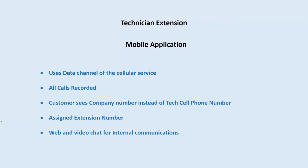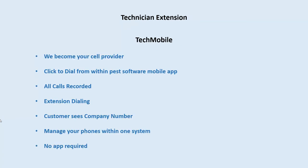The Technician Extension is a solid option, but the ideal solution is what we call Tech Mobile. With the Technician Extension you can either go with the mobile app or the Tech Mobile option. Tech Mobile is a revolutionary solution where we actually become your cell provider — instead of Verizon, AT&T, or T-Mobile, we would be your cell provider and provide you with the SIM, or a SIM and new device if needed.